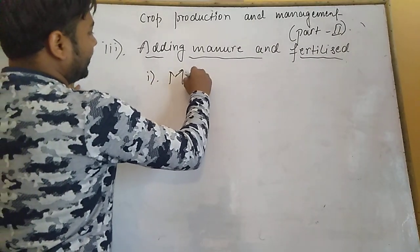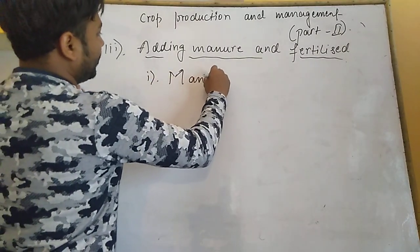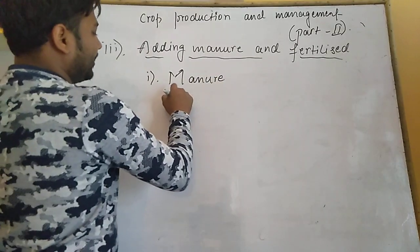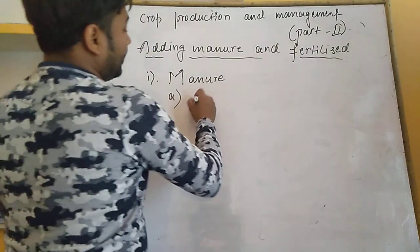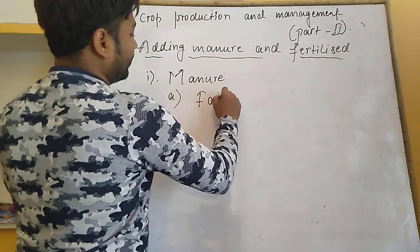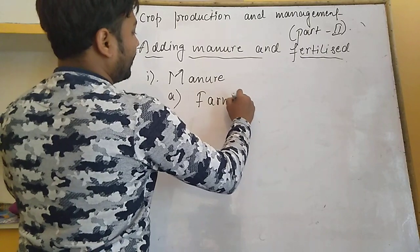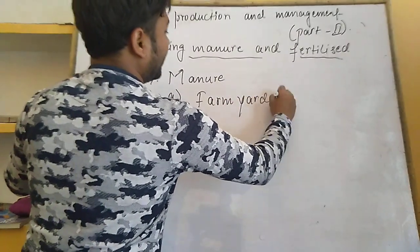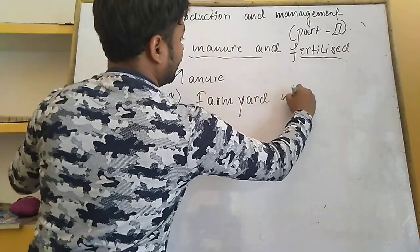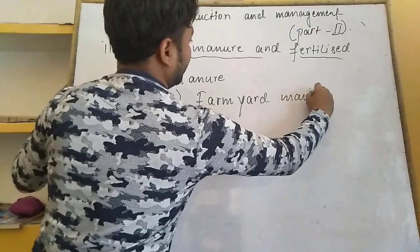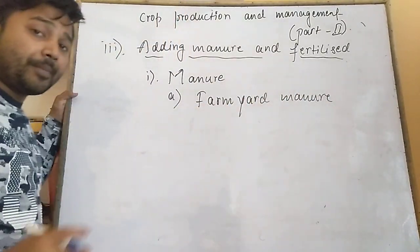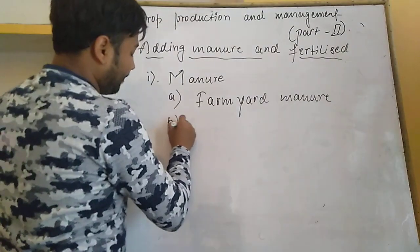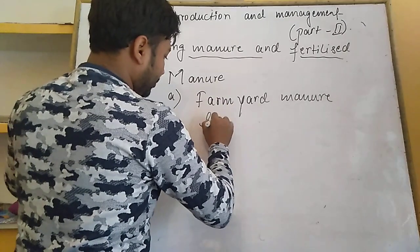The first type is manure. The types of manure are: farmyard manure and green manure.